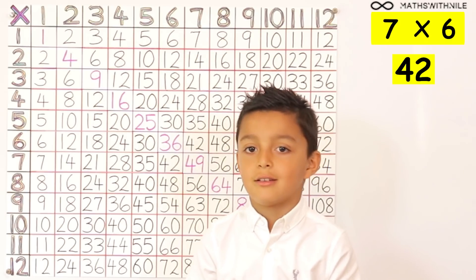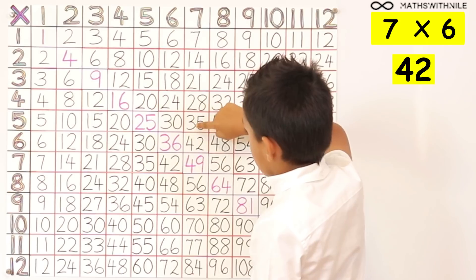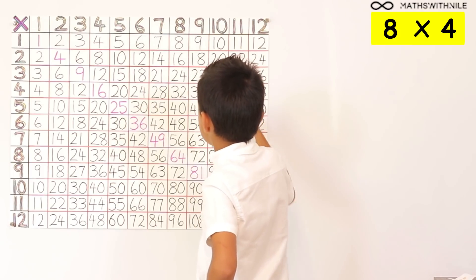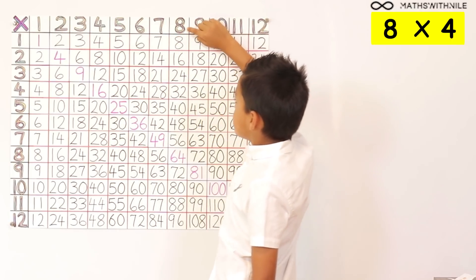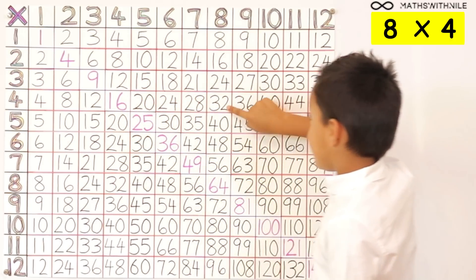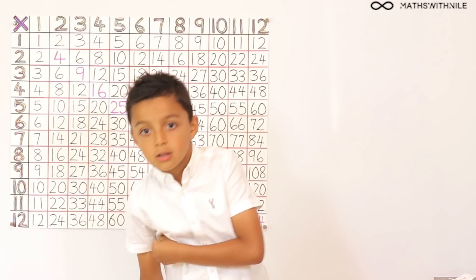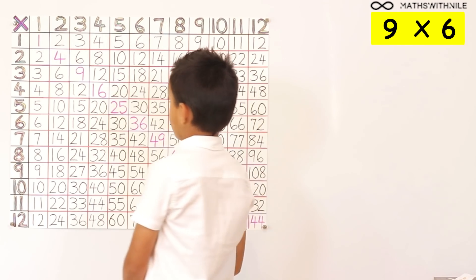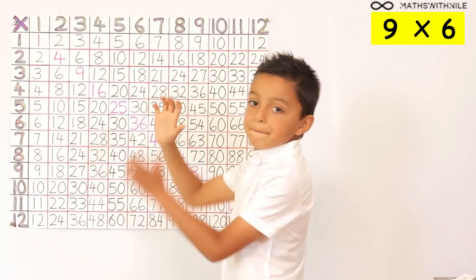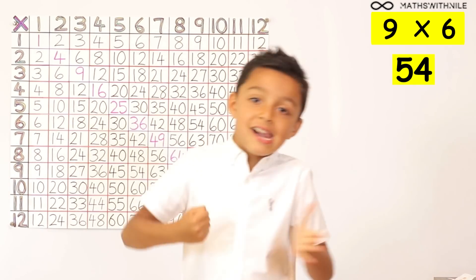Can I show you another way to do that? Look at the 7 times table and just count down 6 times: one, two, three, four, five, six — that's it! So that's quite easy. Why don't you do 8 times 4 using that method? 8 times 4 — I'll start with the 4 times table: one, two, three, four, five, six, seven, eight. So 8 times 4 is 32. Let's do one more: 9 times 6. Nine, then one, two, three, four, five, six. So 9 times 6 is the same as 6 times 9 — six lots of nine. Brilliant.